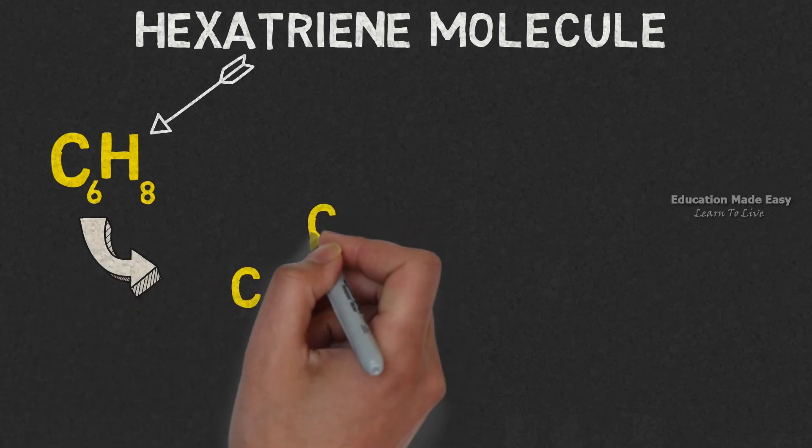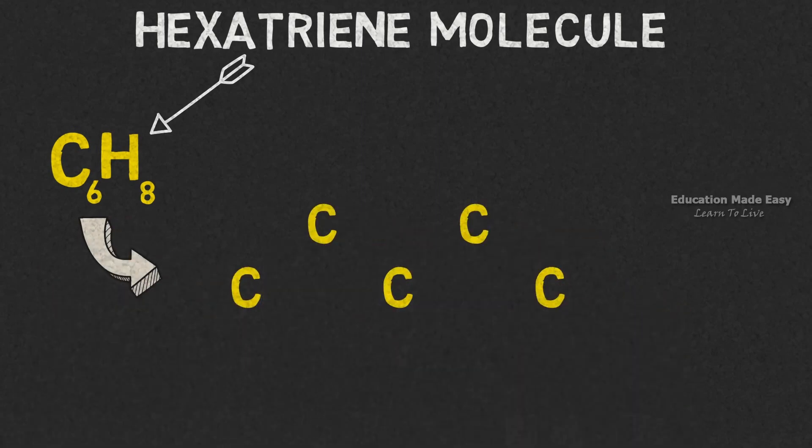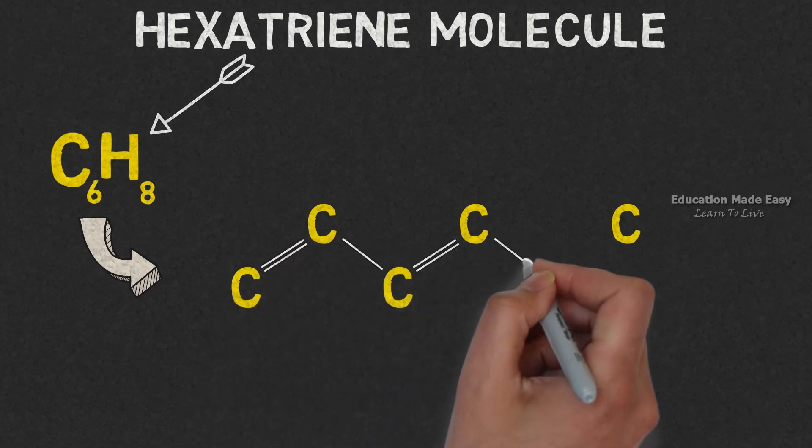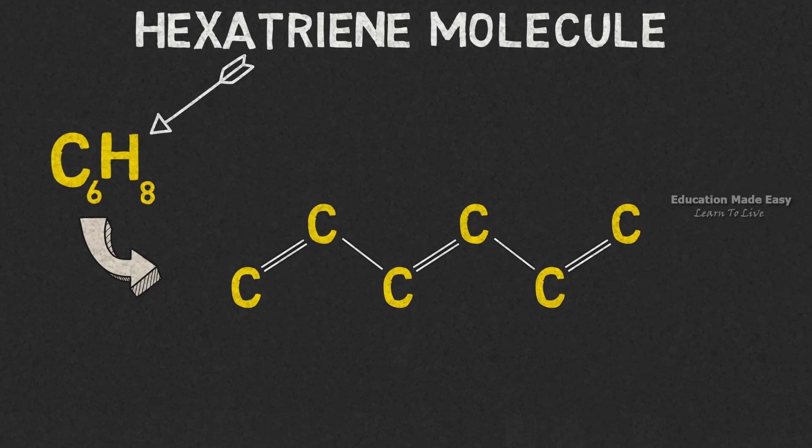Like benzene, hexatriene also has six carbon atoms. Each carbon atom is bonded to one carbon atom with a double bond and another carbon atom with a single bond. There are eight hydrogen atoms bonded to carbon atoms as shown.